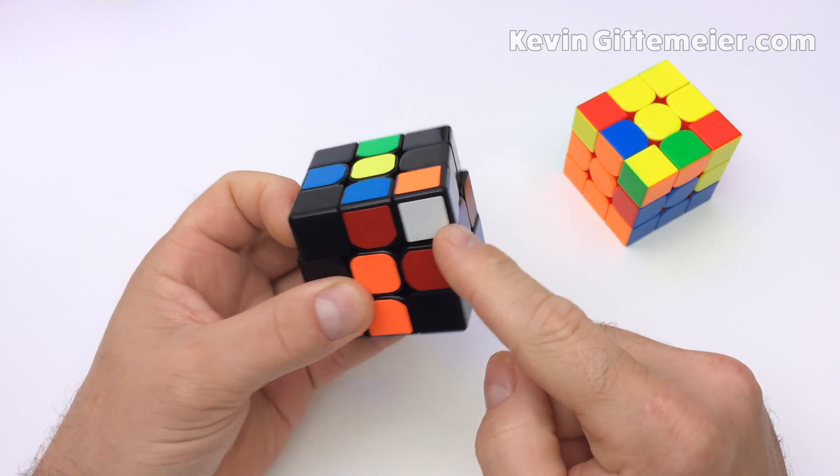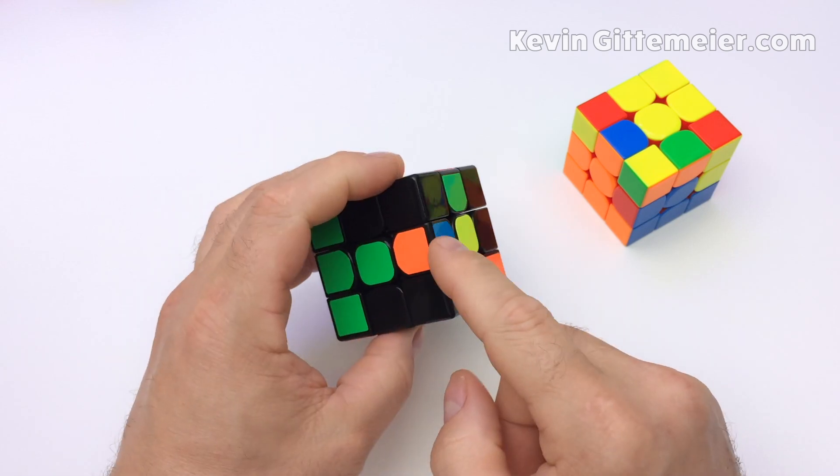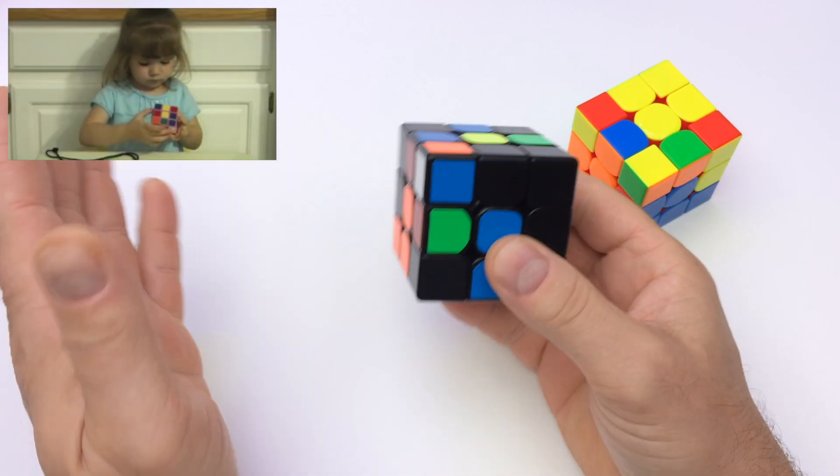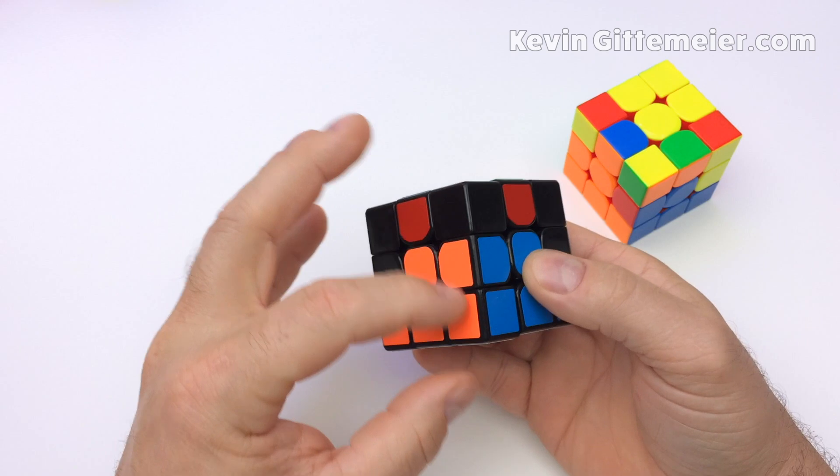Now move that corner back over its empty spot where it goes. So here we have the edge, here we have the corner. Now just insert this corner piece as you normally would, slap the white side. And you can see it paired up with that edge.